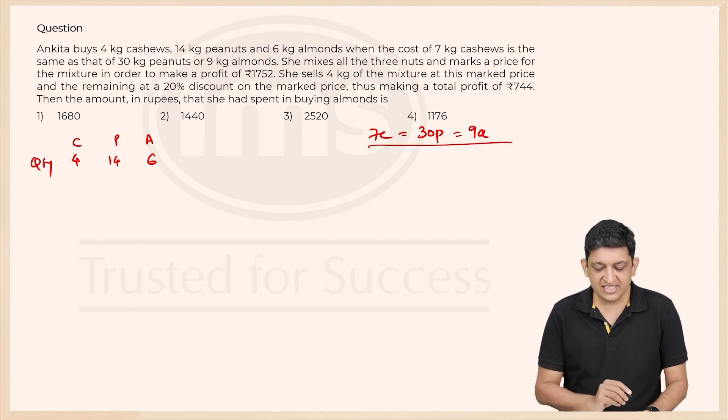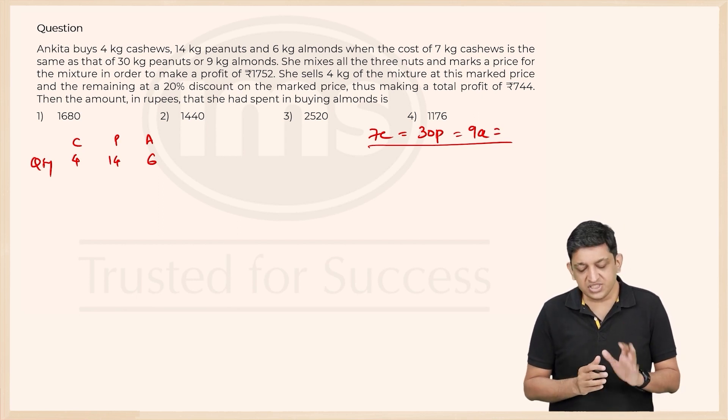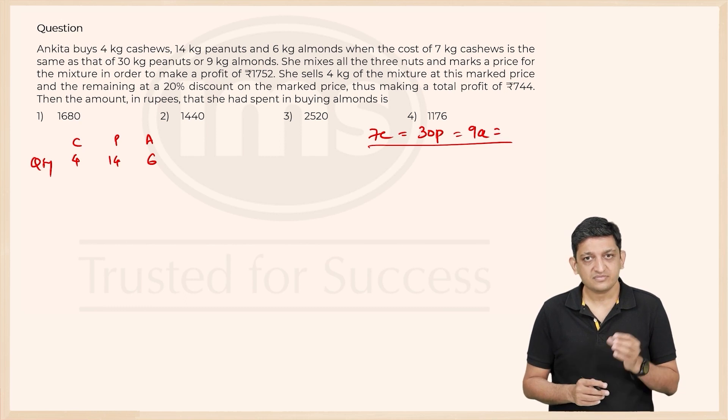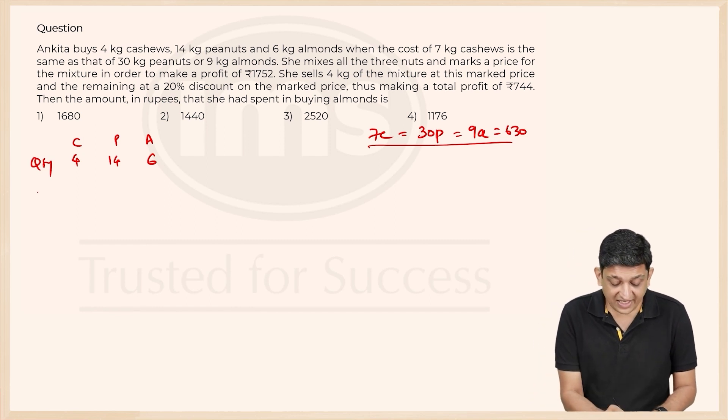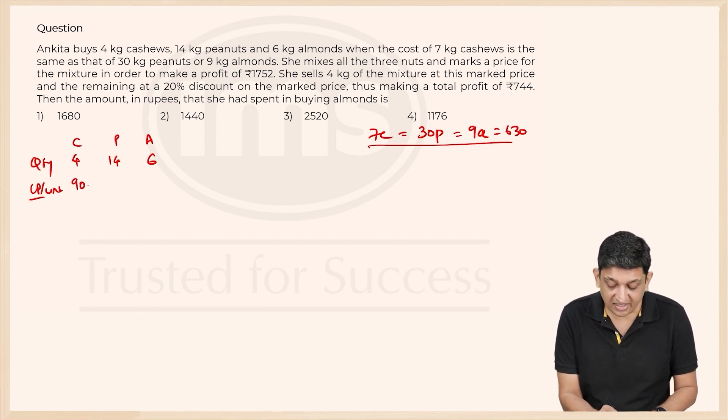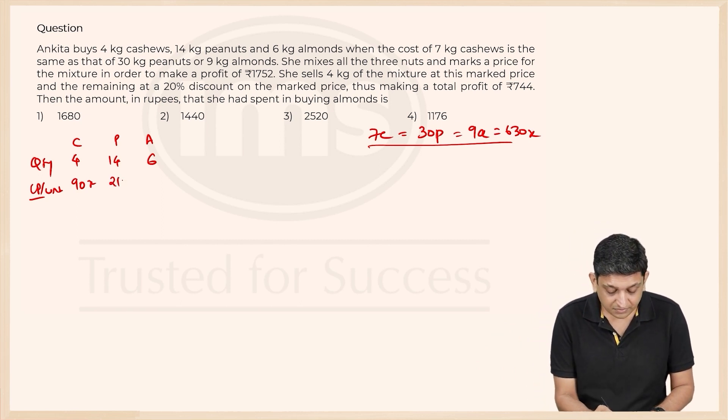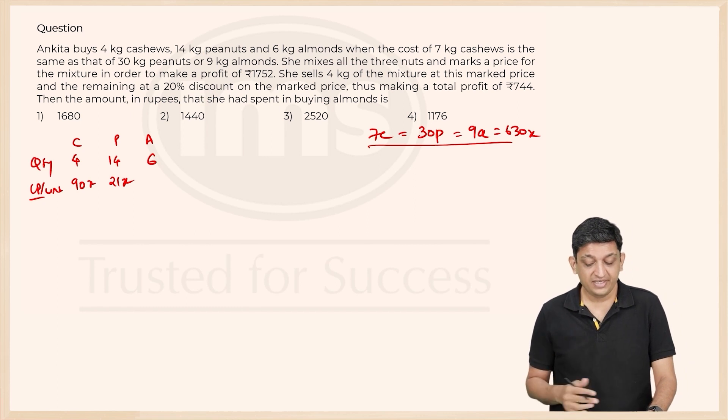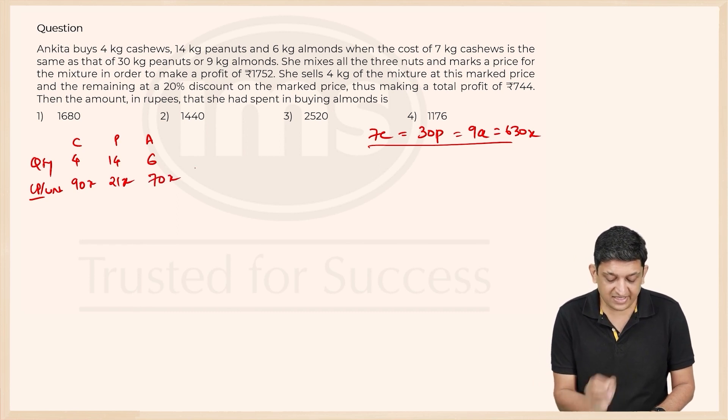Now in this particular context, 7C plus 30P, 7C equals 30P equals 9A should be equal to some number which is a multiple of 7, 30 and 9. The smallest such number that I can think of here is 630. And in this context, we can say that the cost price per unit of cashews will be 630 by 7C or you can say 90, 630X let us say for example, so 90X. Similarly, in terms of almonds, 9A equals 630, so almonds will be 70X.